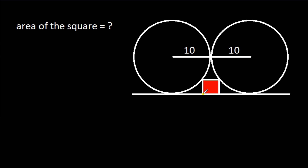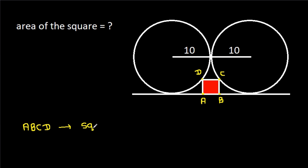Suppose this point is a, this point is b, this point is c, and this point is d. Then we know that a, b, c, d form a square.